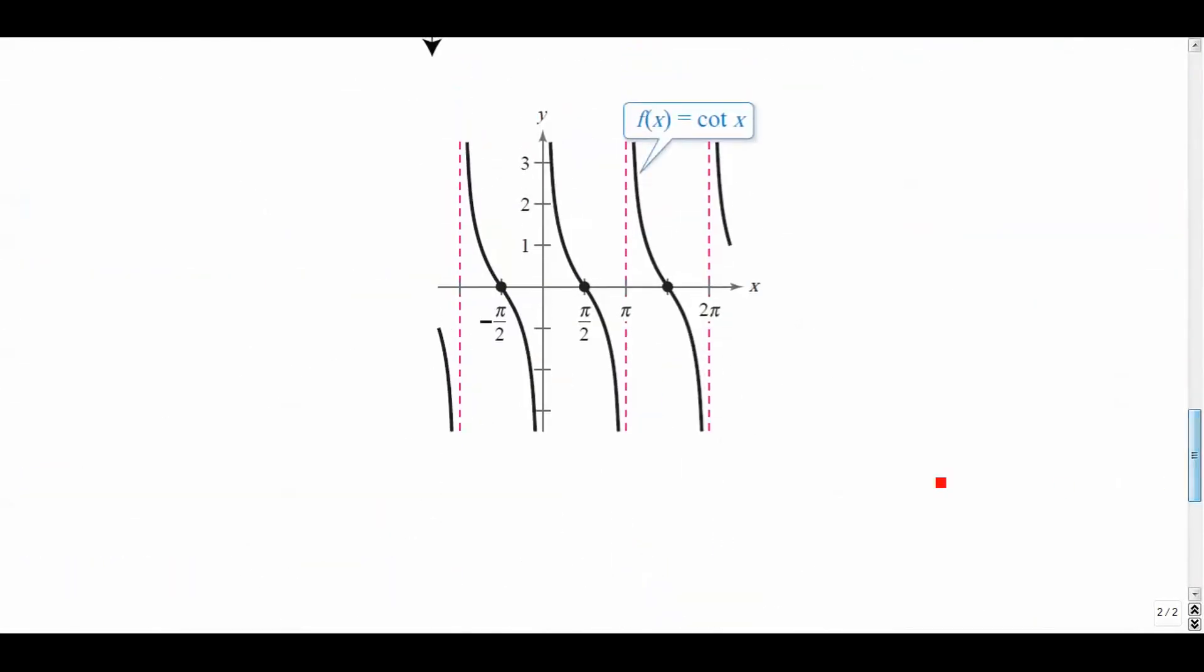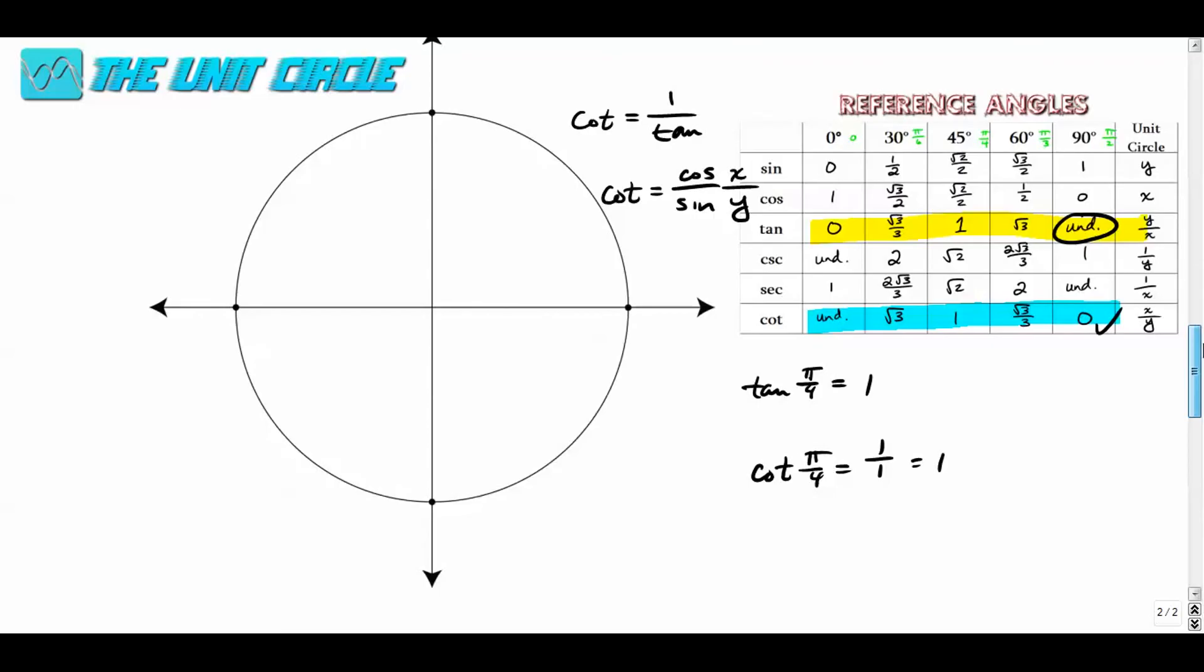A little bit better looking graph is right here. All right, cotangent's in black. The pink lines, of course, are the asymptotes, and you can see that it's cyclical. It keeps repeating over and over again. All right, so there you go.